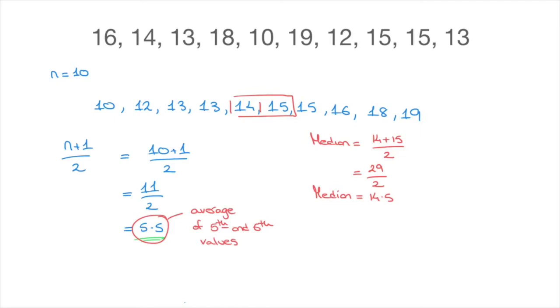And so now we know how to find the median whether we have an odd or an even number of values in our list of data. Do remember the formula we used to locate the median value. Remember, that was n plus one over two. And this formula tells us the position of the median value inside our list of data.